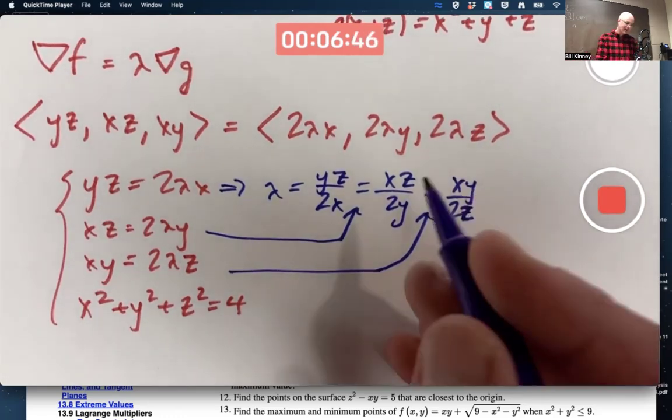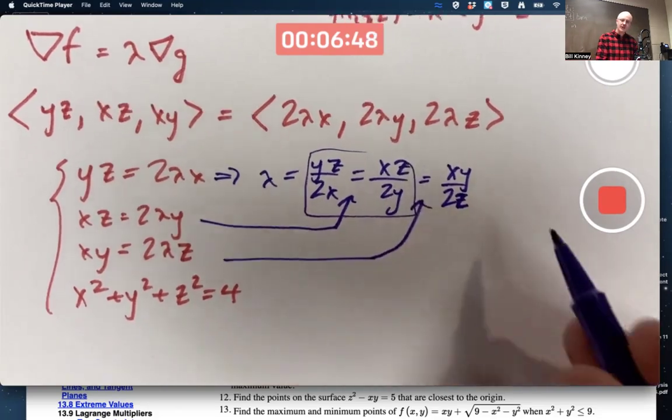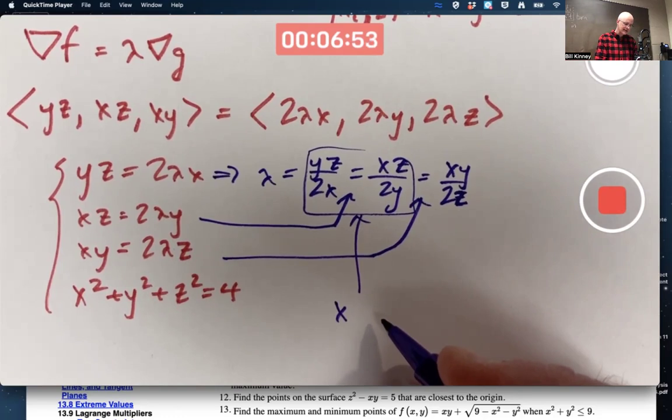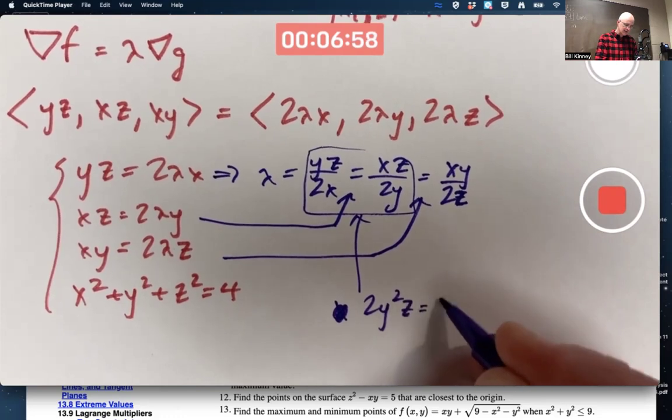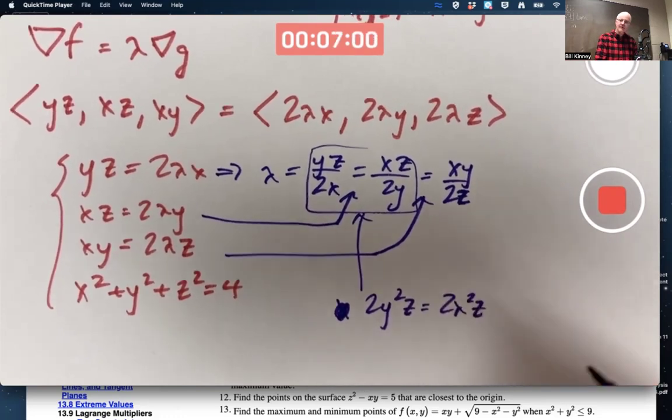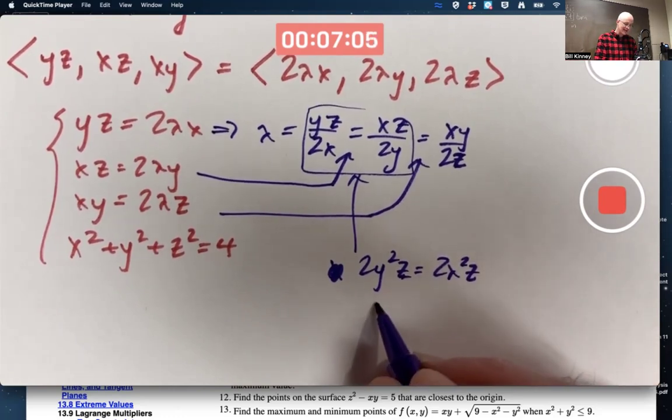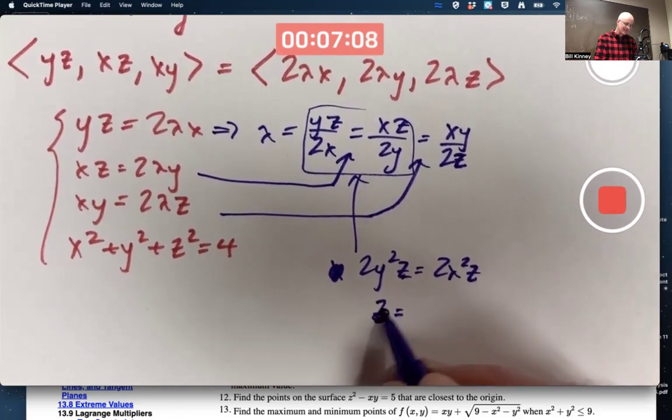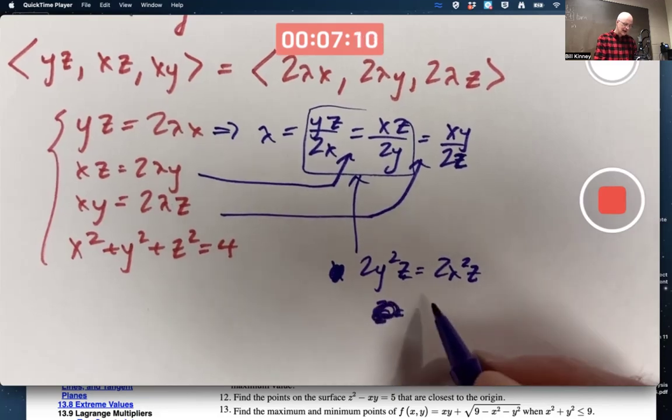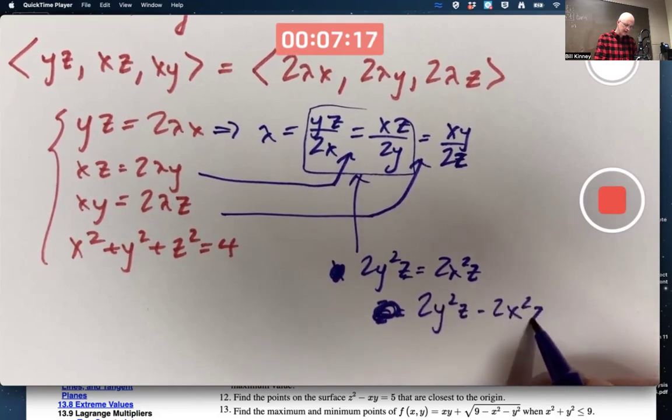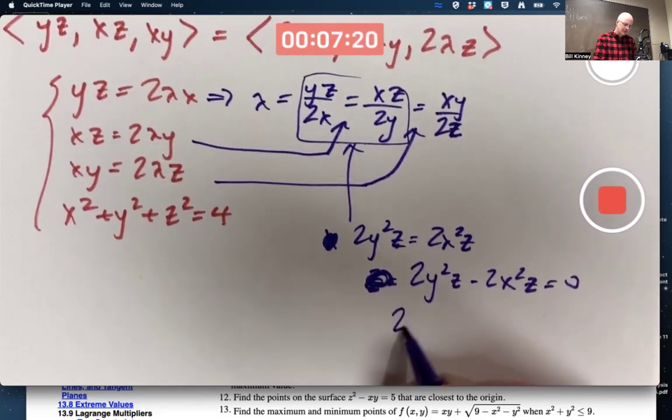What should we do with this? I mean, we could take one of these equations and, for example, solve it for X in terms of the other things. Cross multiply. Like 2Y squared Z equals 2X squared Z. So you could write Z equals... This does get tricky. Probably we'd want to rewrite it like this. 2Y squared Z minus 2X squared Z equals 0. Factor out of 2Z.